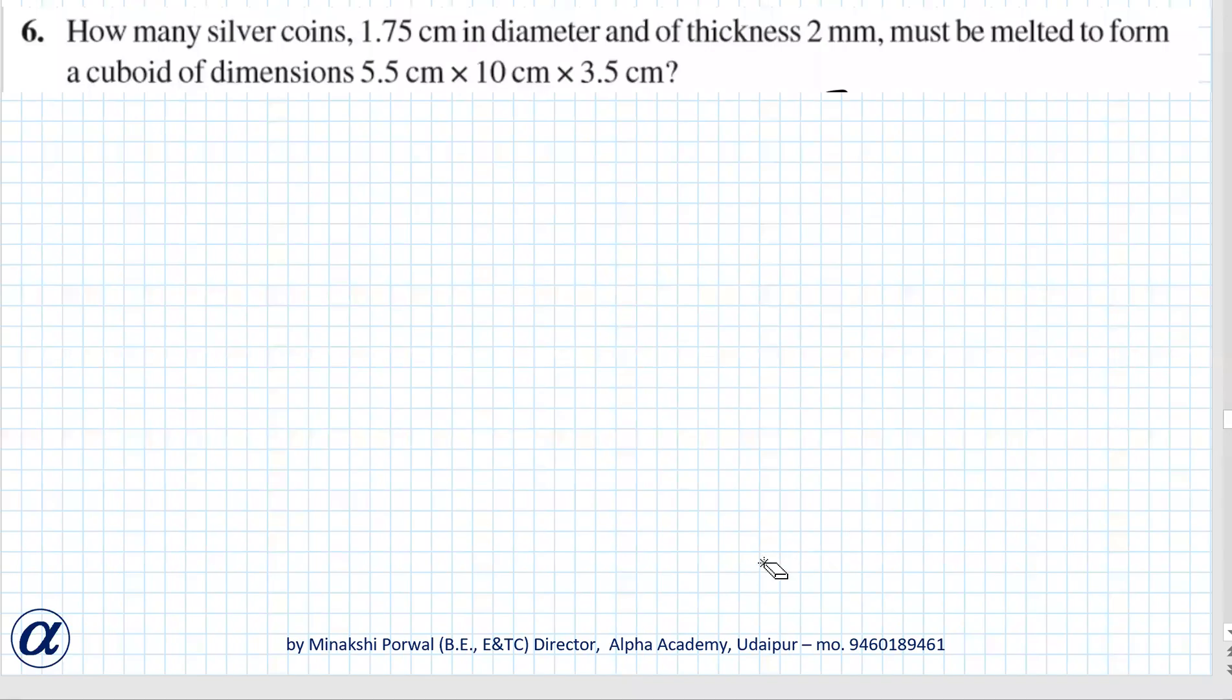How many silver coins 1.75 centimeter in diameter and of thickness 2 mm must be melted to form a cuboid of dimension 5.5 x 10 x 3.5 centimeter? So basically the question is various silver coins are melted and they are formed into a cuboid. We have to find how many silver coins will be melted to form the required cuboid.